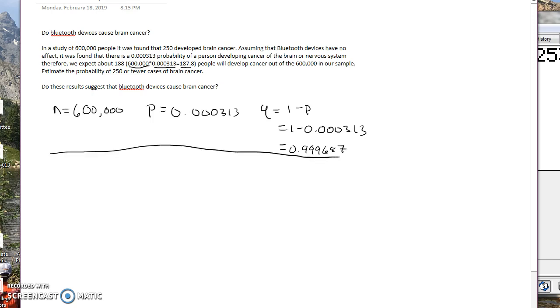The next step, it doesn't necessarily require us to do it here, but what you do to make sure that we can use the normal to approximate the binomial is we want to make sure N times P and N times Q are both greater than or equal to 5. So when I do N times P, that's going to be 600,000 times 0.000313, which gives us 187.8.